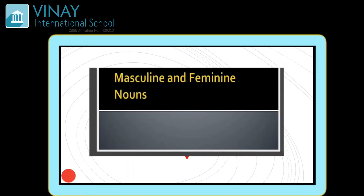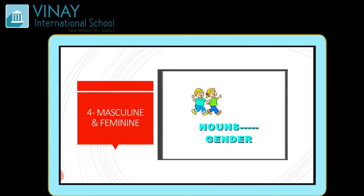Good morning children. Today we are going to study Chapter Number 4, that is Masculine and Feminine, which belongs to the grammar portion. Now let us begin with the chapter. What is the meaning of masculine and feminine? That is nouns gender. Now, a noun is a name — be it the type of places, be it the person, be it the things. Whatever justifies a name is called a noun.